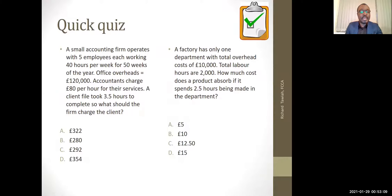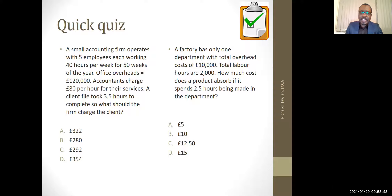So let's look at this typical example. A small accounting firm operates with five employees, each working 40 hours per week for 50 weeks of the year. Office overheads is £120,000. The accountants charge £80 per hour for their services — that is direct labor. A client file took 3.5 hours to complete. So the direct charge is 80 times 3.5, which is £280. That's the direct labor cost.